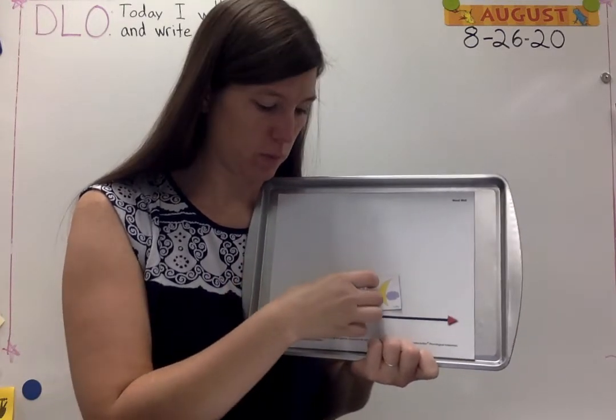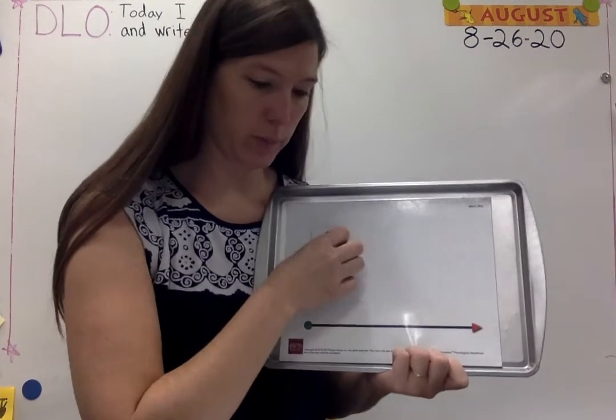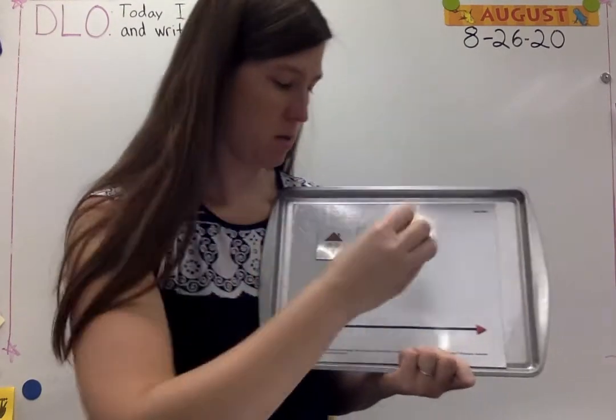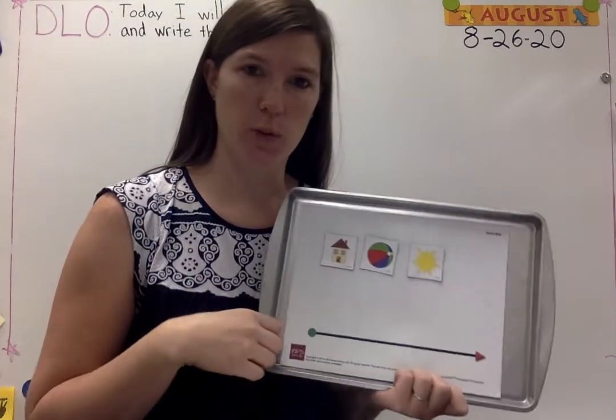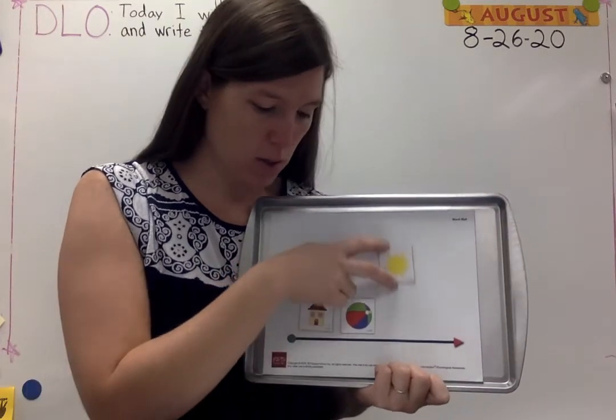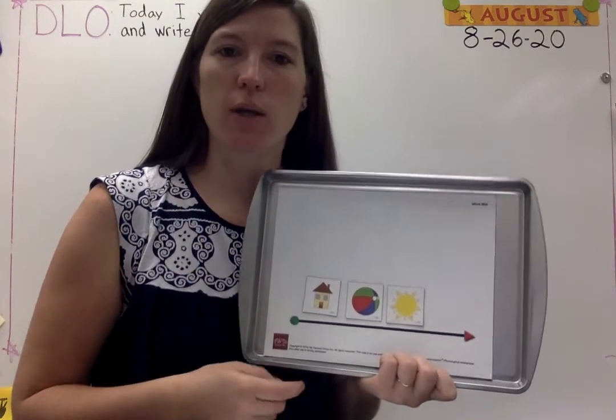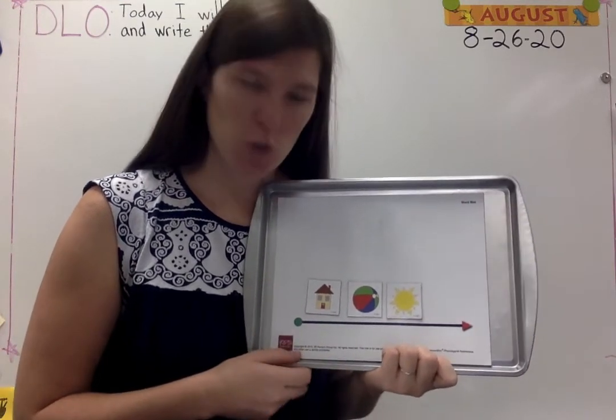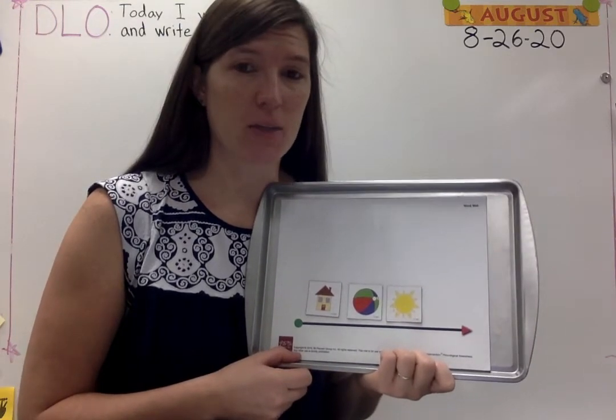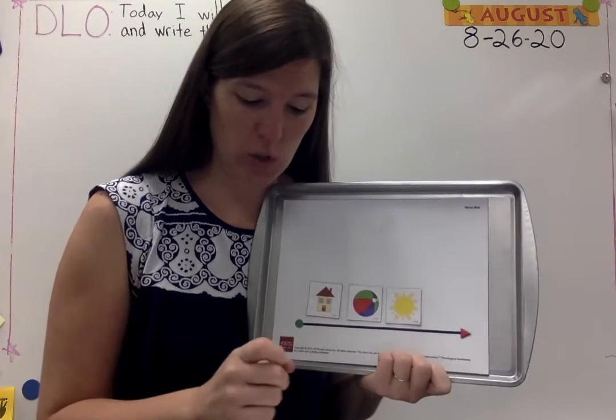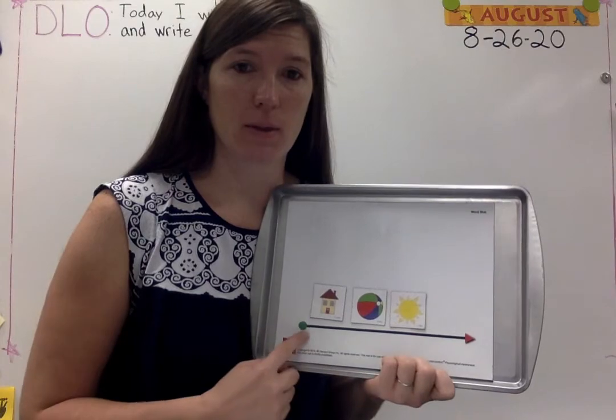Let's do another one. I have house, ball, and son. Let's say them as I pull them down to help us remember. House, ball, son. Which word is in the middle? Ball. Which word is at the end? The end means last. Son. Good. Which word is at the beginning? House.